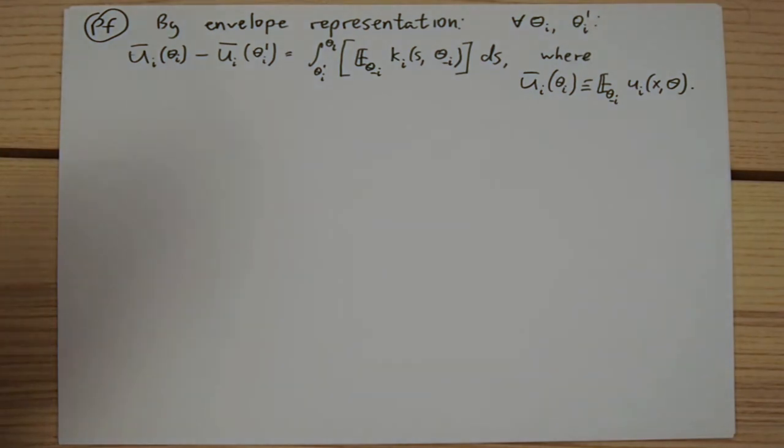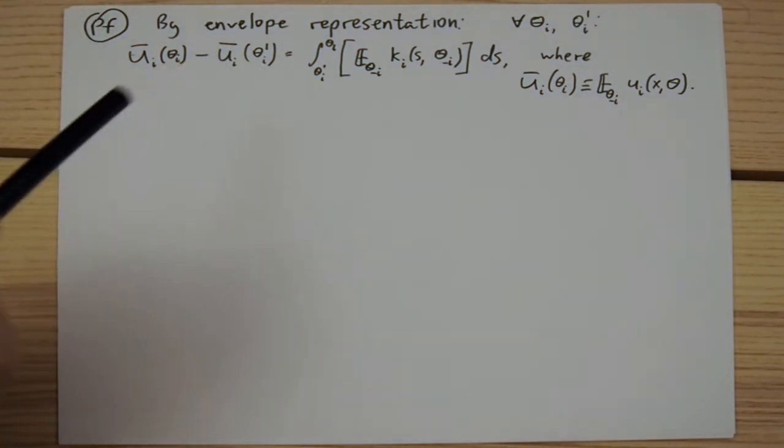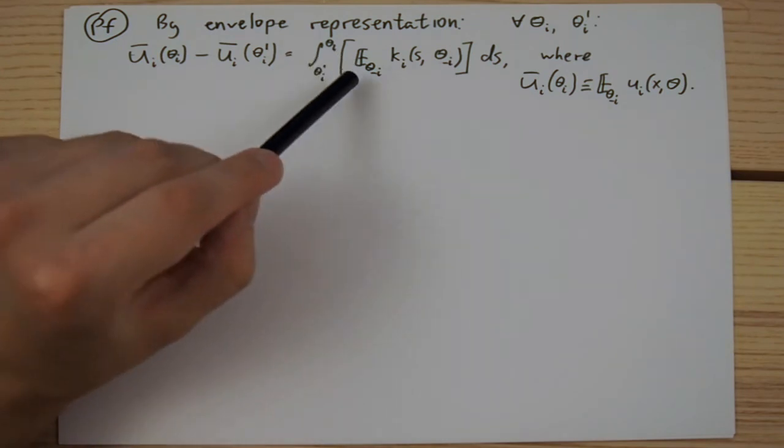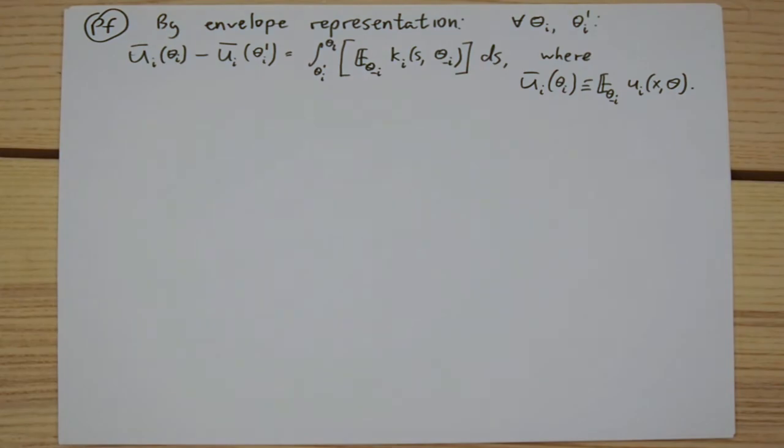This expression says that the difference between the expected utilities that these two types of player i receive only depends on the expected allocation of player i. Note that we can fix one of these two arbitrary types to be the least charitable type.